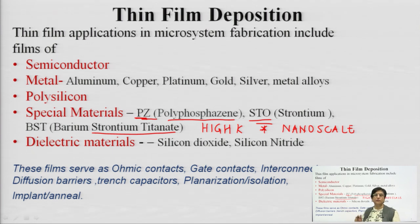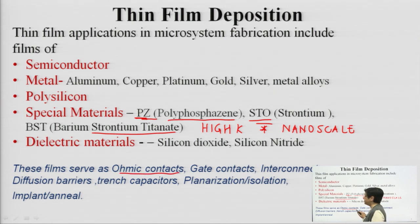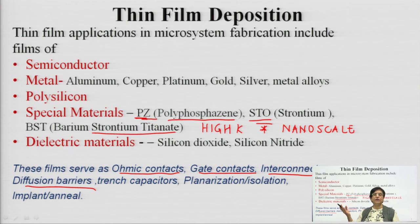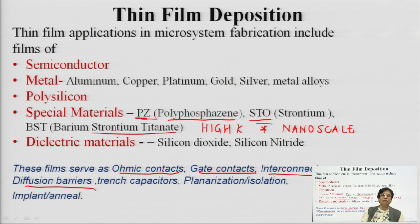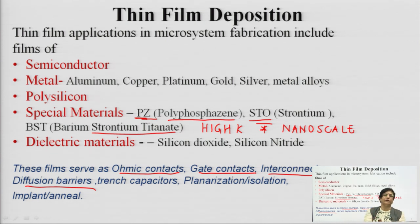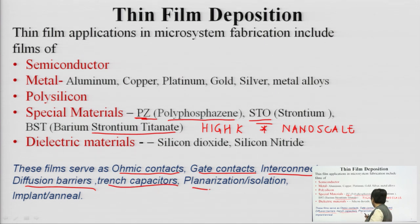Whenever these thin films are to be deposited, a specific technique must be adopted. These films serve as ohmic contacts, gate contacts, interconnects, and diffusion barriers. As seen in etching, a thin layer of silicon nitride works as an etch stopper — whatever material is above it gets etched away, and etching automatically stops when the silicon nitride layer is reached. Other applications include trench capacitors, planarization, isolation, implants, and annealing.